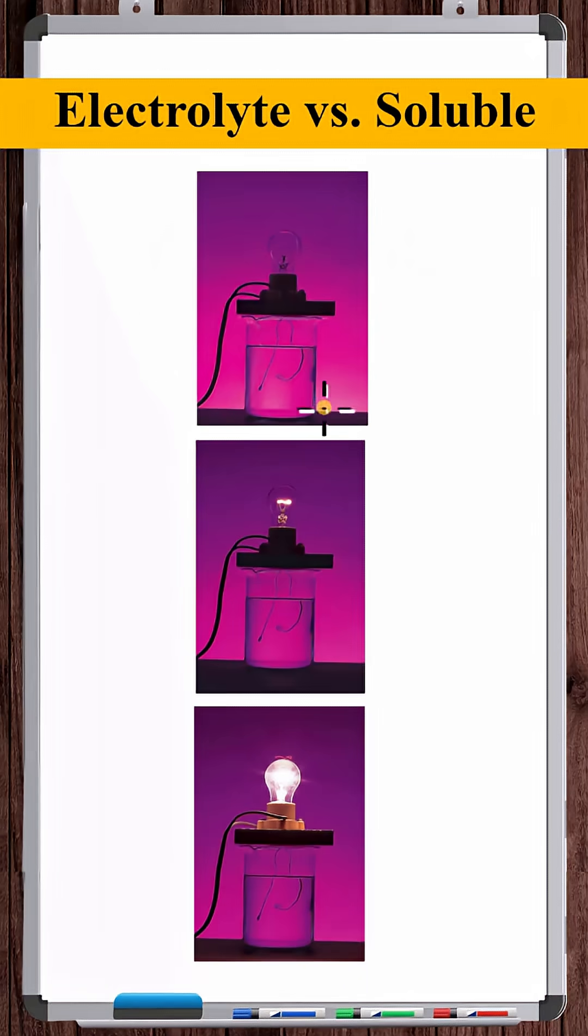Here, the light bulb doesn't turn on, but it doesn't matter how much of a non-electrolyte you dissolve in this water, the light bulb will never shine.